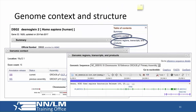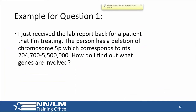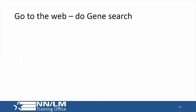In the gene record, this section is called the genome context and structure, and you can see it listed in the table of contents. Our first example: a person has received a lab report for a patient with a specific chromosome deletion, and the nucleotides in that deletion are listed. The person wants to find out what genes are involved. So we're going to the web to do a gene search.